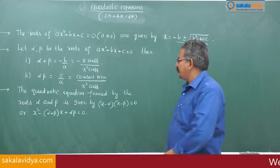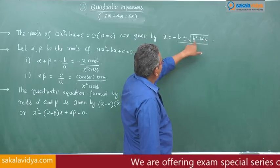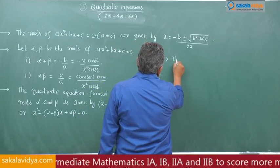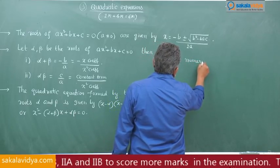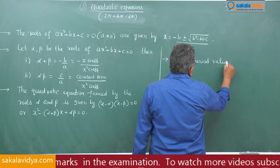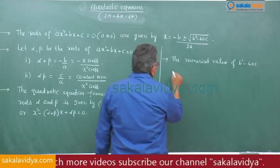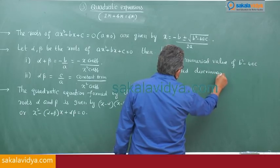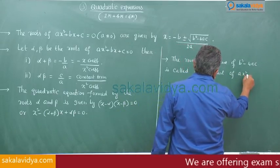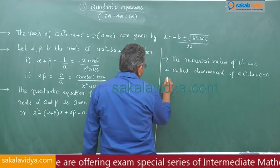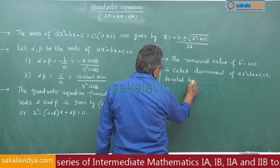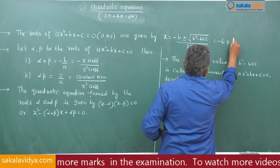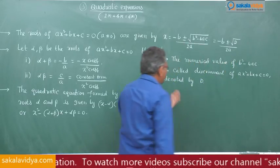The expression b² − 4ac is known as the discriminant. The numerical value of b² − 4ac is called the discriminant of ax² + bx + c = 0, denoted by D or delta. So the quadratic formula can also be stated as x = (−b ± √D) / 2a, where D = b² − 4ac.